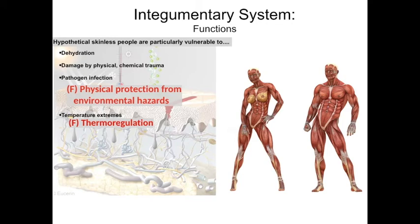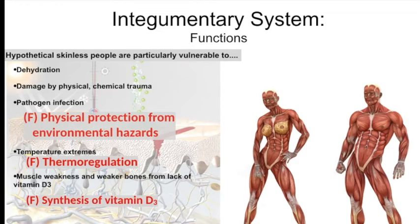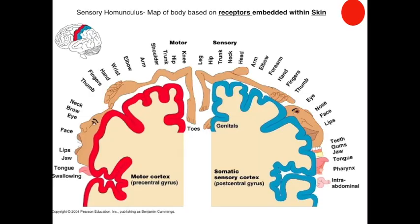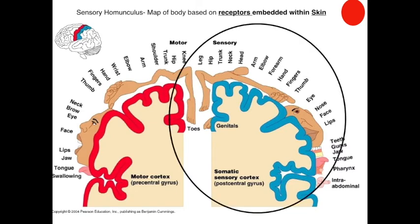Those skinless people would also be vulnerable to muscle weakness and osteoporosis because skin helps with the synthesis of vitamin D3. Skin is the organ in direct interface with the external environment, and sensory receptors embedded within your skin provide the most intimate close-range environmental information — what is touching you, is it soft or pointy, how hard is it pressing, is it hot or cold, is there a bug crawling across your skin? When we get to the brain, you'll learn about the sensory homunculus, which is the map of your body in your brain based on these sensory receptors.